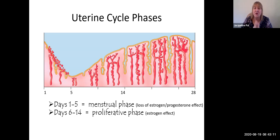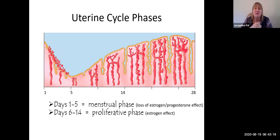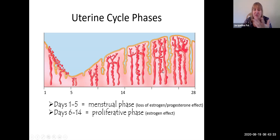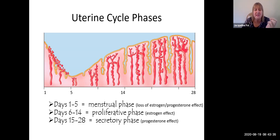Day 14 is when ovulation occurs. After ovulation we now have a corpus luteum — not only do we have estrogen, but now the corpus luteum is giving us progesterone, and that changes what's happening in the endometrium. The glands become very tortuous and we get a super rich blood supply. This is called the secretory phase.